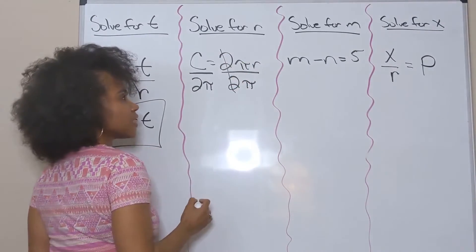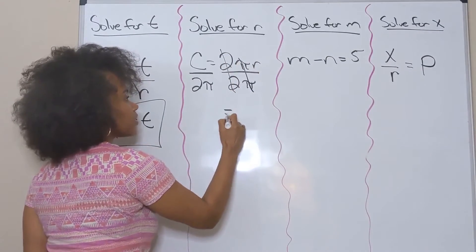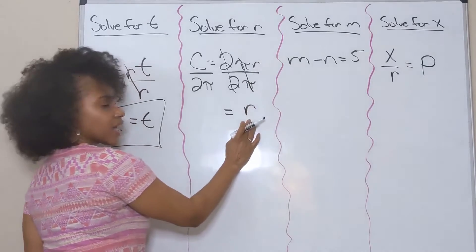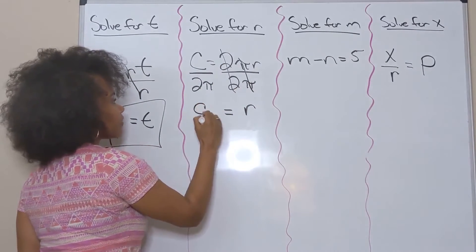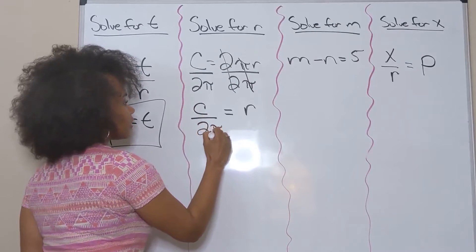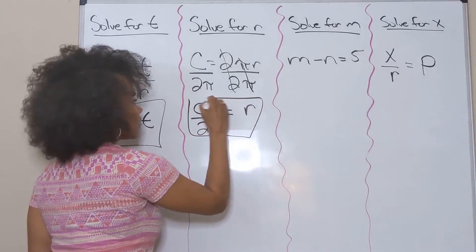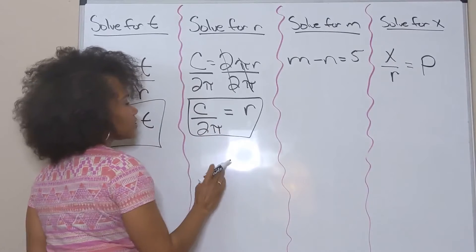2 will cancel out, π will cancel out, bring down my r so I have it by itself on one side. I just bring down what I have, and I can't combine anything because there are no like terms. So I've solved that literal equation or formula for r.